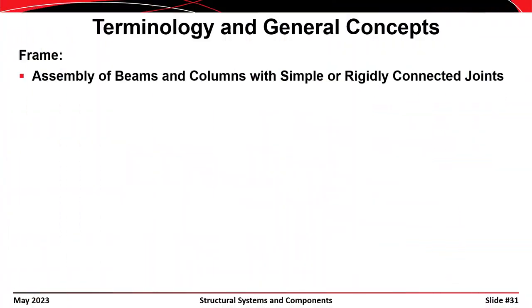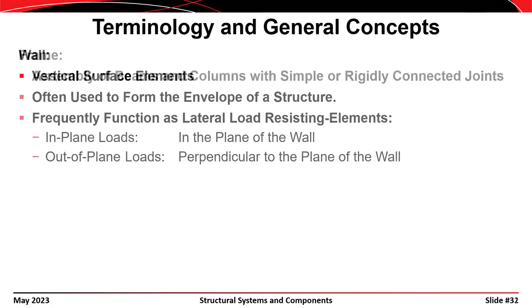In contrast to a truss, a frame is an assembly of beams and columns with simple or rigidly connected joints. Members in a frame carry more than just axial compression or tension — they also carry shear force and bending moment.